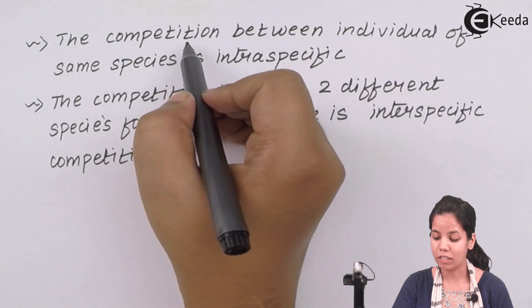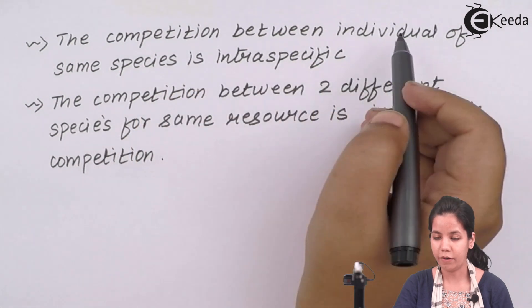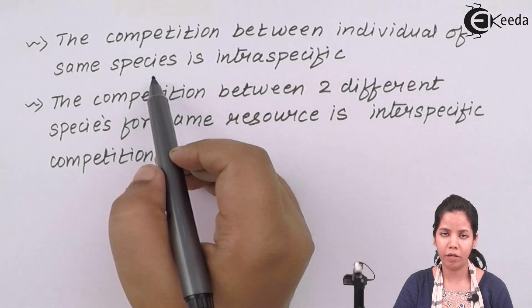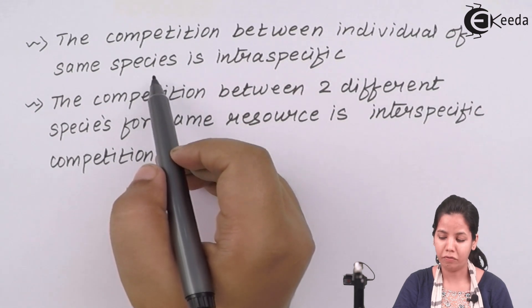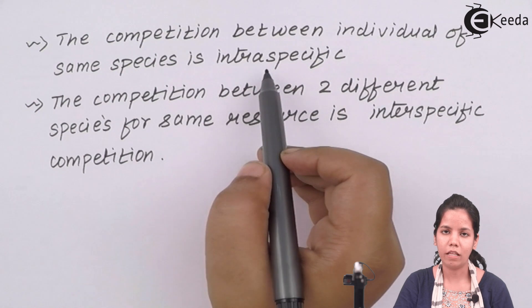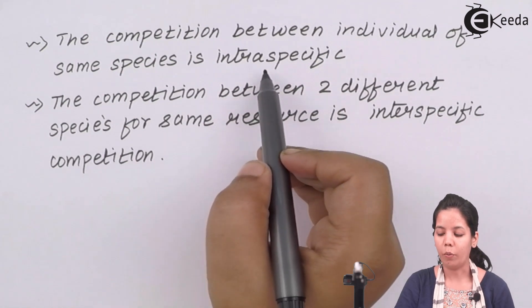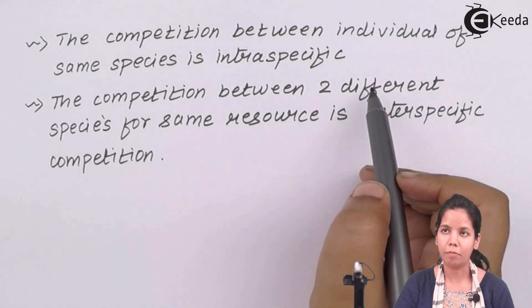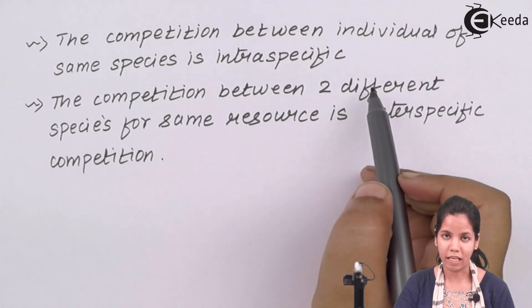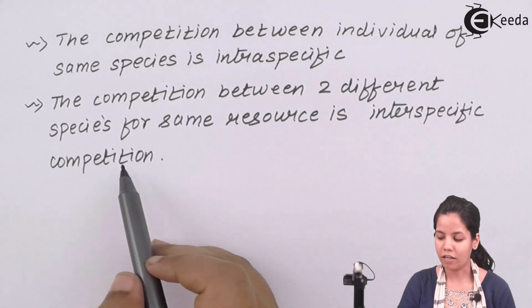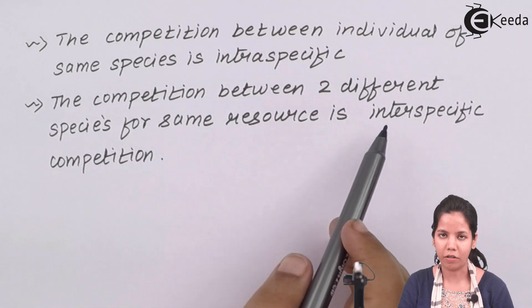When the competition is between individuals belonging to the same species — for example, two different human beings, two different lions, or two different leopards — such competition is called intraspecific competition. Whereas when both the species are different, for example a leopard fighting with a zebra or a cat fighting with a monkey, that competition is called interspecific competition.